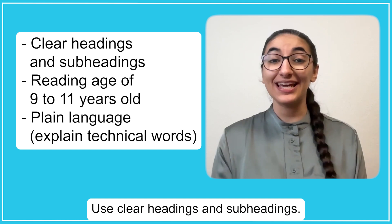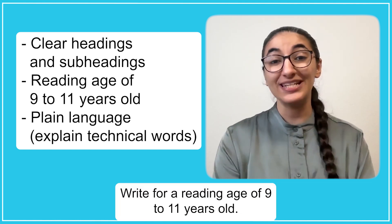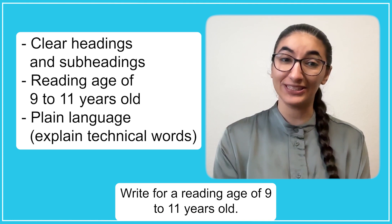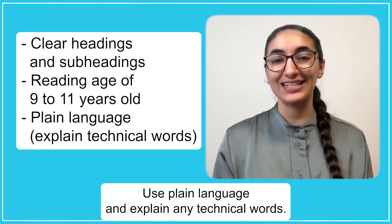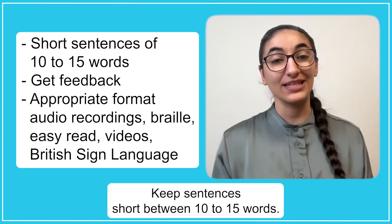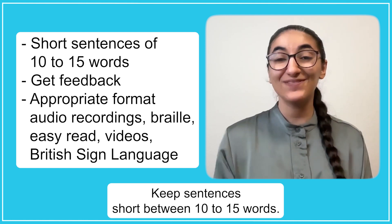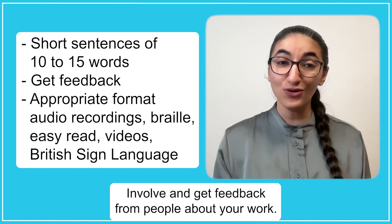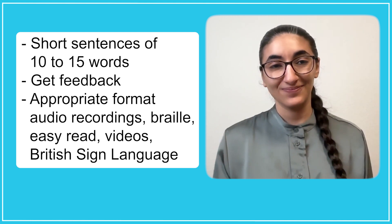Use clear headings and subheadings. Write for a reading age of 9 to 11 years old. Use plain language and explain any technical words. Keep sentences short, between 10 to 15 words. Involve and get feedback from people about your work.